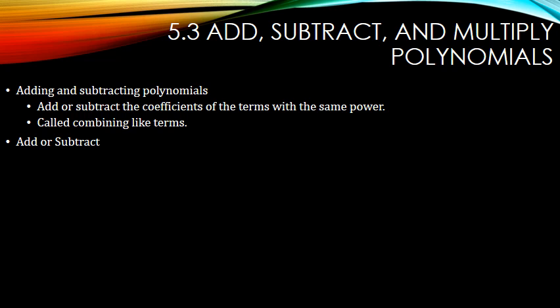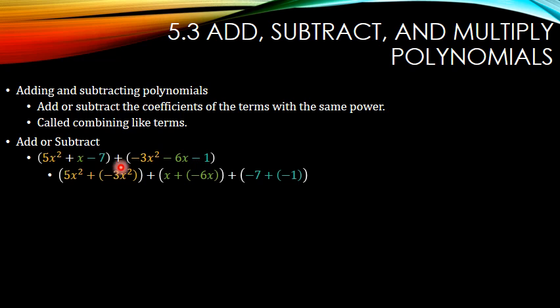So here we are. Let's add or subtract these two polynomials. I've color-coded the like terms: the x-squares, the x's, and just the constants. Without an x, it's called a constant. So we're going to add or subtract by combining the like terms — the x-squares, the x's, and the constants.